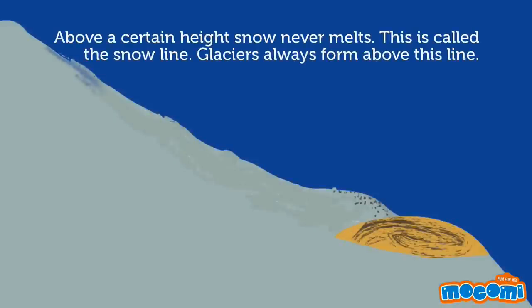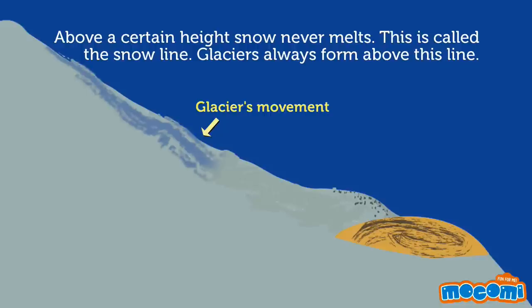Above a certain height, snow never melts. This is called the snow line. Glaciers always form above this line.